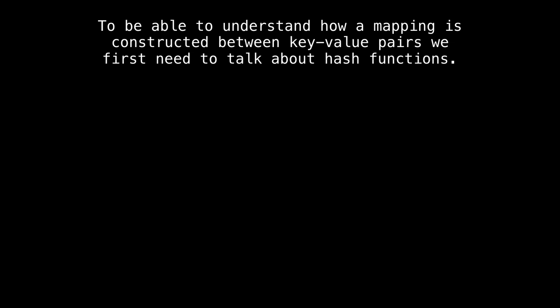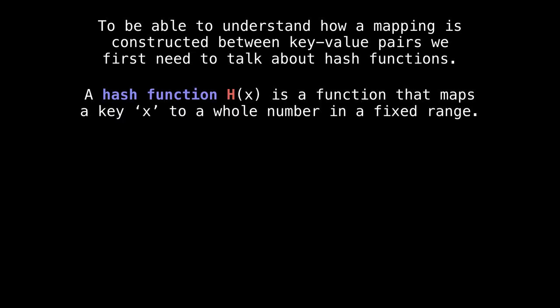So to be able to understand how we construct the mapping within the hash table, we need to understand what a hash function is. So simply put a hash function, which I will denote from now on as h of x, for some key x, is a function that maps x to a whole number in some fixed range. So that's pretty simple.